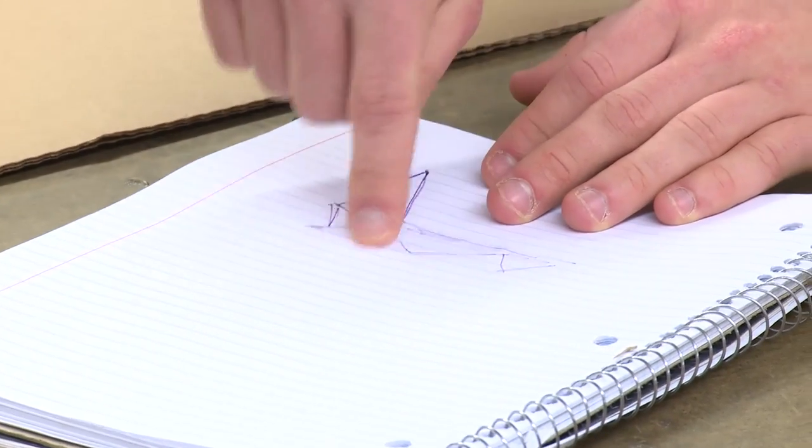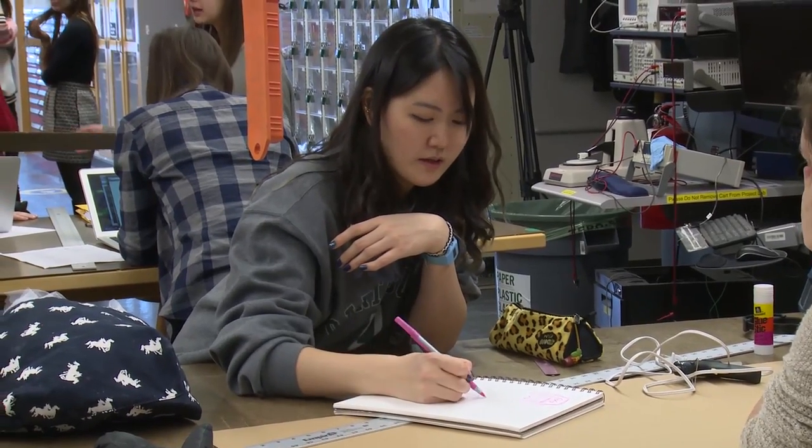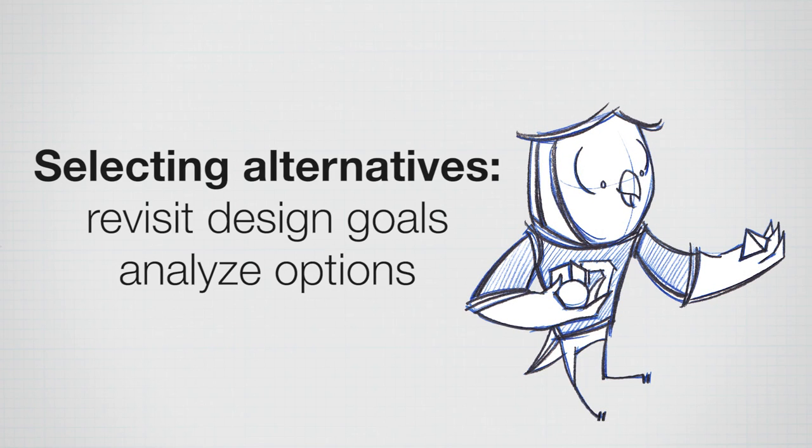I encourage you to write down or sketch your ideas so you don't forget them. For the cardboard chair, look at existing chairs to come up with ideas, but be creative — remember that's one of your goals. When selecting alternatives, revisit your design goal to make sure the idea you're selecting has the potential to meet those goals. Sometimes it's easy to choose the best alternative; other times you have to carefully evaluate the pros and cons. I'd encourage you to record your reasons for selecting different alternatives, as you might revisit this phase if your selected alternative doesn't work out.